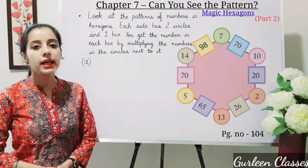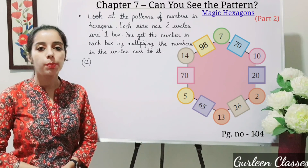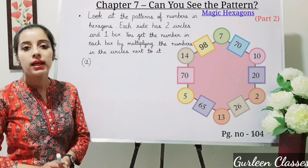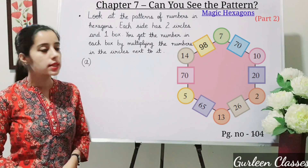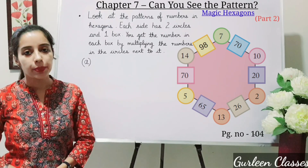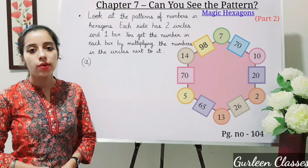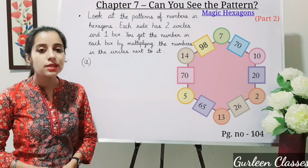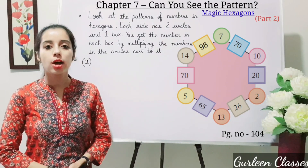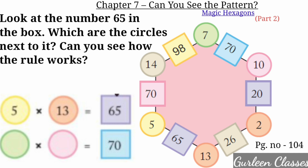Next topic: Magic Hexagons. This topic is in your NCRT book, page number 104. The question is: look at the patterns of numbers in hexagons. Each side has two circles and one box. You get the number in each box by multiplying the numbers in the circles next to it. Here you can see the hexagon drawn in your book.